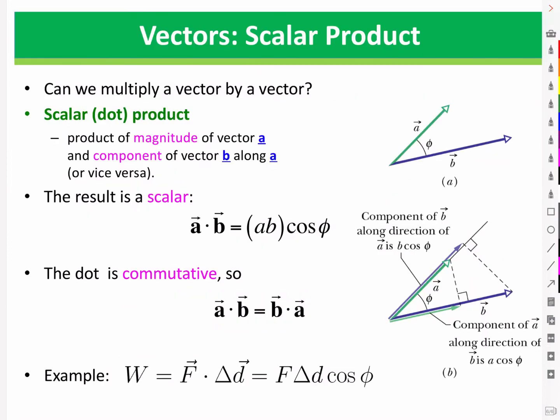You might ask, where does this equation come from that we use for work? The equation arises from a particular vector multiplication called the scalar product. This is the product of one vector a with the component of a vector b along a. So that's this vector here, b cos phi. It's the projection of this b vector onto an axis that is parallel to the a vector. In other words, we only multiply the parallel components of the vectors.